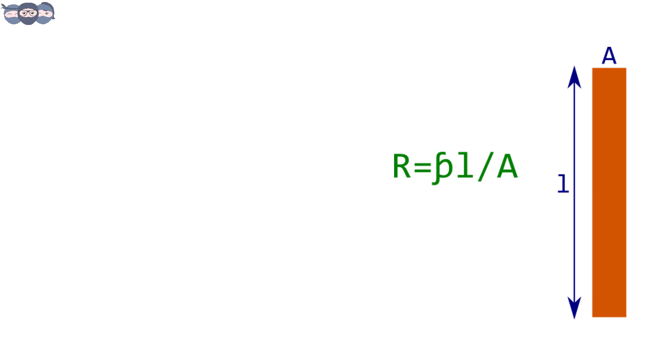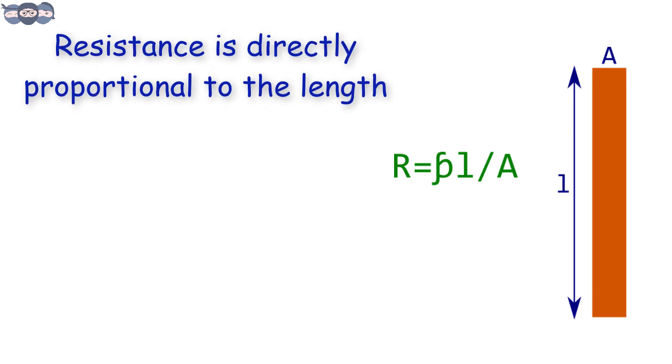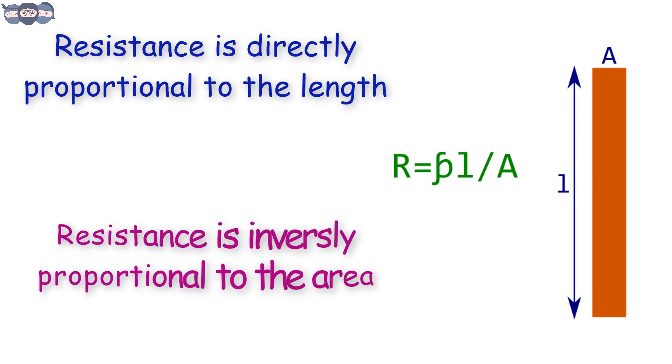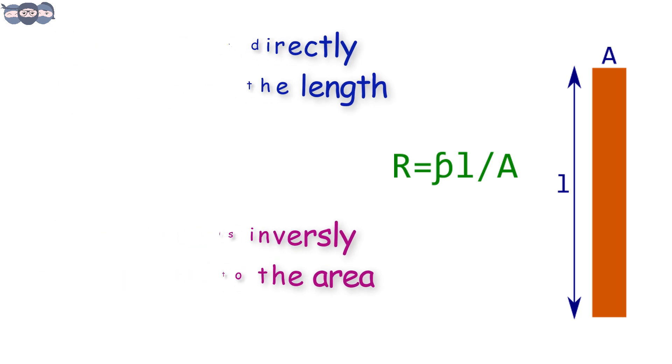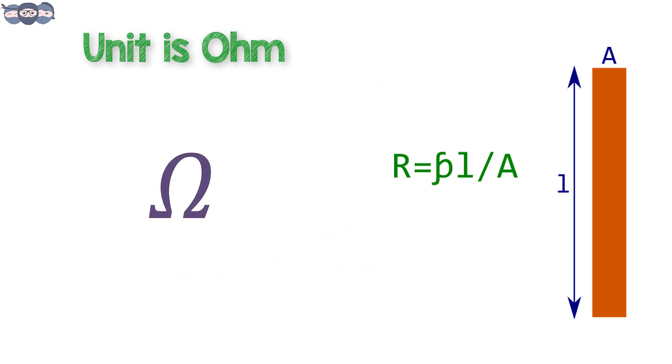From the formula, we can infer that the resistance is directly proportional to the length and inversely proportional to the cross section area. Increasing the length increases the resistance. The unit of resistance is Ohms.